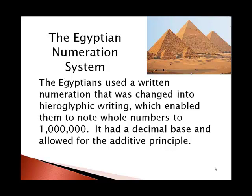This enabled them to write whole numbers up to a million and even beyond that. It had a decimal base, so it's base 10, which is like our Hindu-Arabic system. And it also used the additive principle, which means you take the values for the different hieroglyphs and add them together to get the whole value for the number.